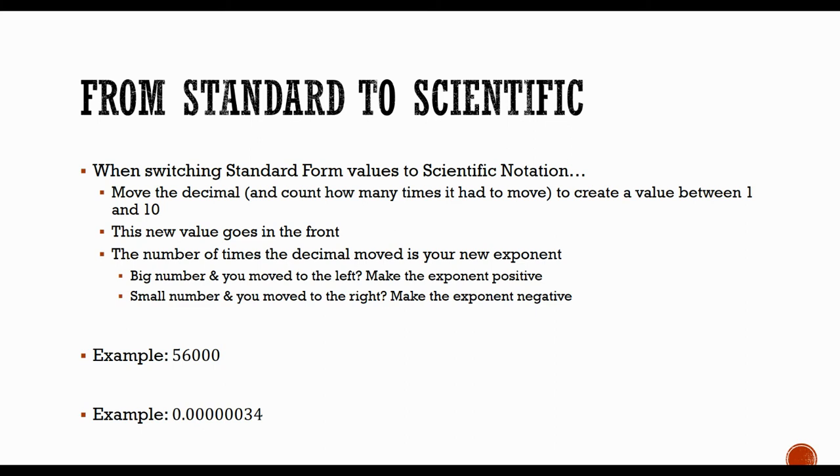Our first example is 56,000. Sometimes with big numbers, you're not going to see the decimal, but remember it's after the number. So that's our decimal point right there. Now we're going to have to move this decimal to the left because we're trying to make this number smaller and smaller until we're somewhere between 1 and 10. Move it there. And then I would have 5,600. Still not small enough.